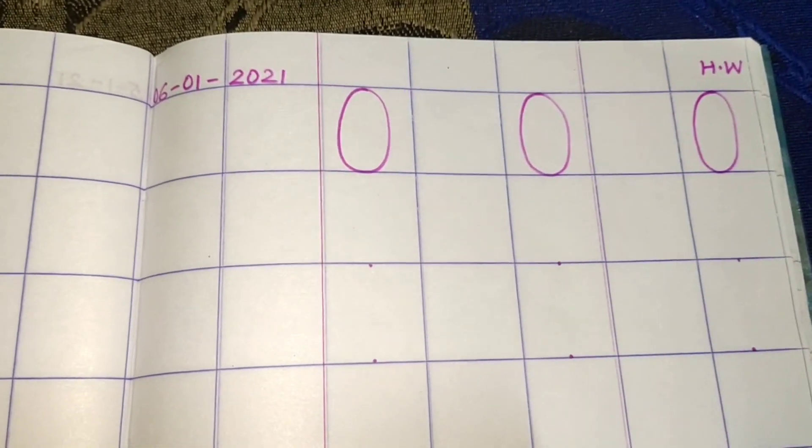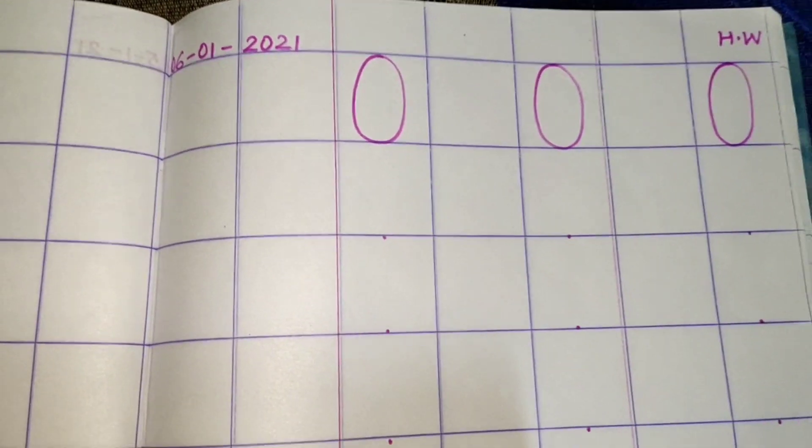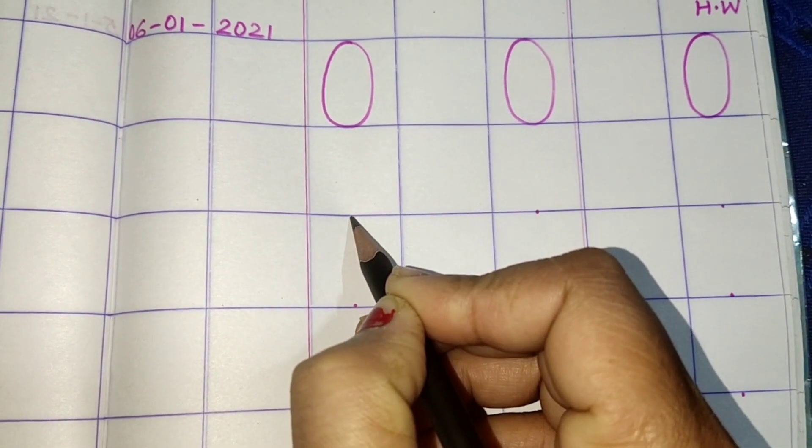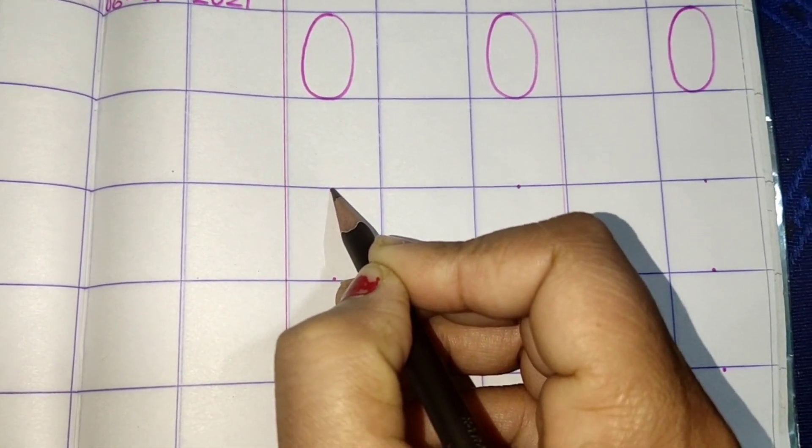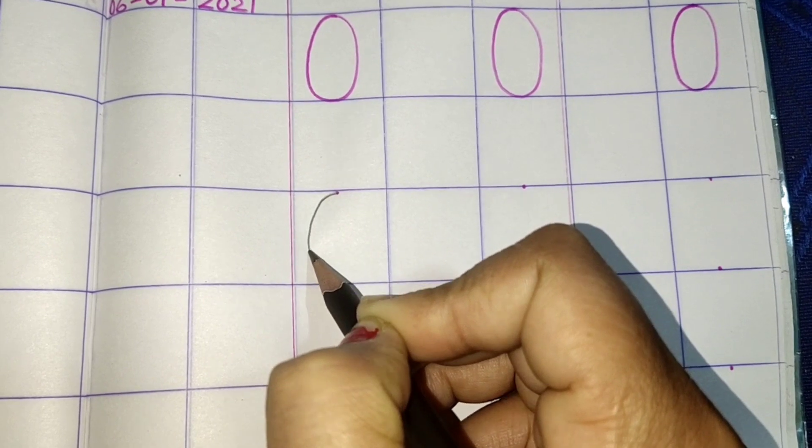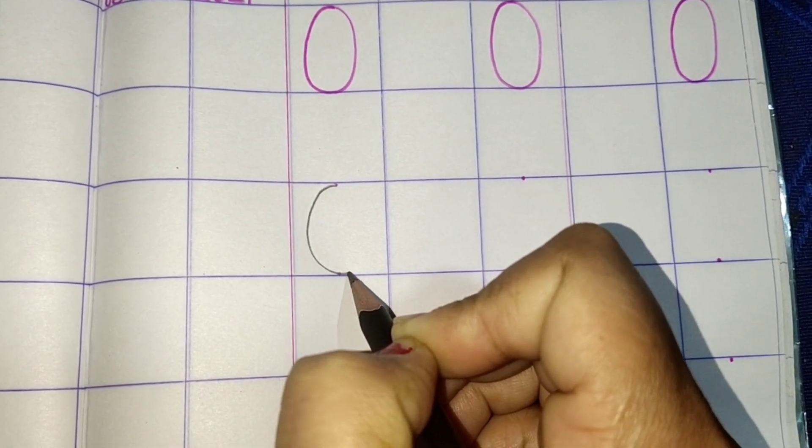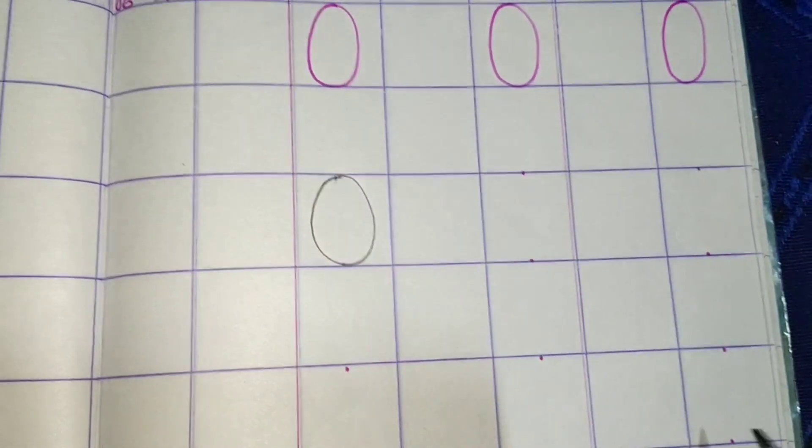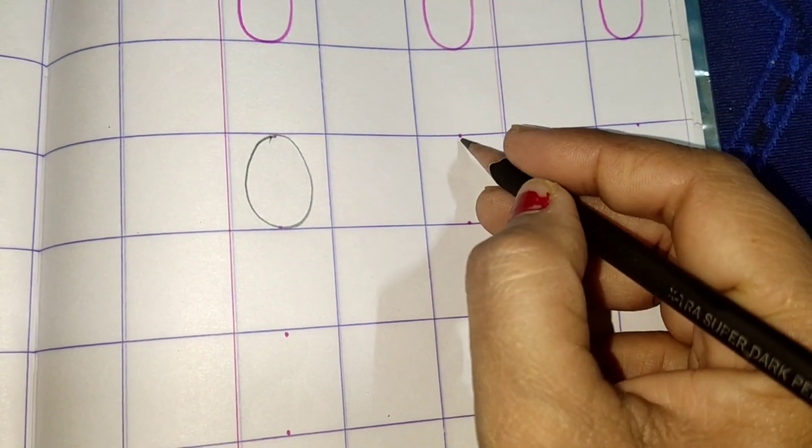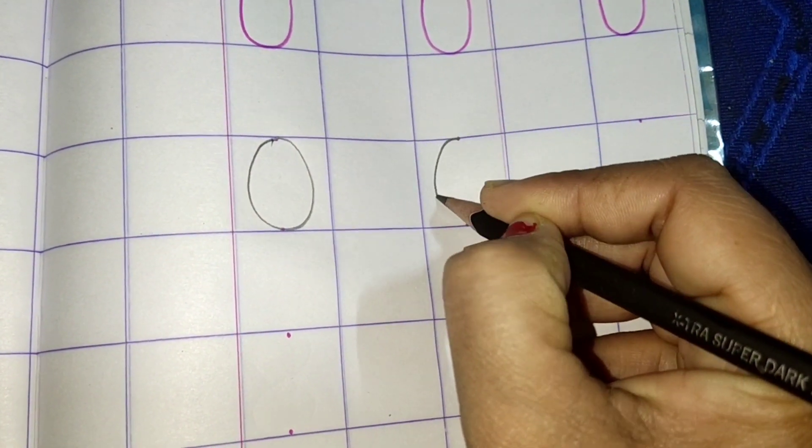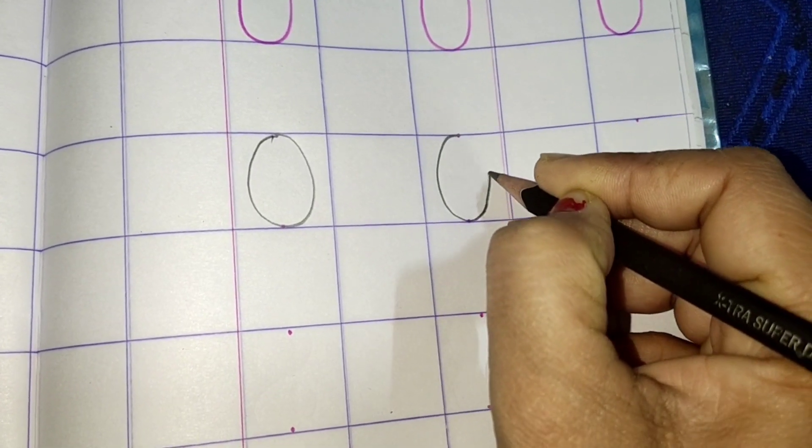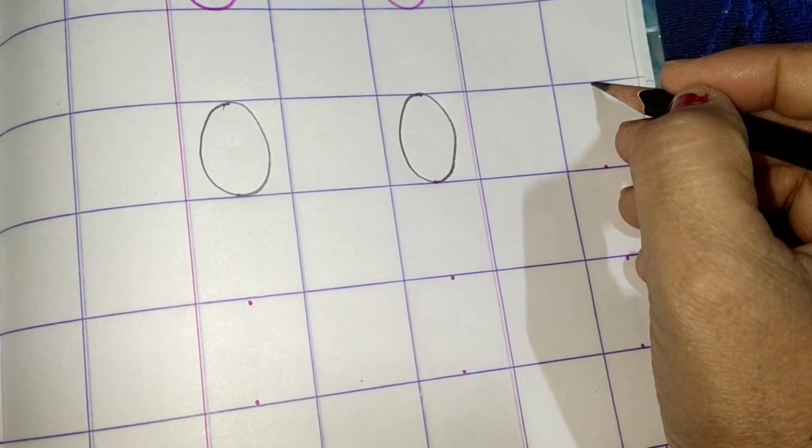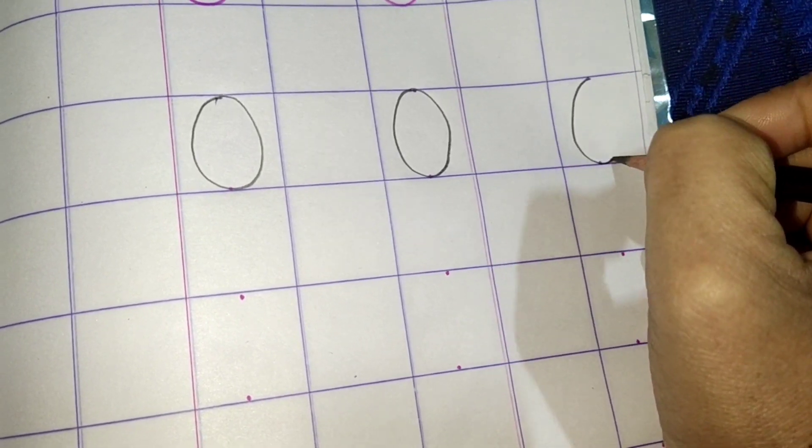Okay. Now, let's see how we write number zero. Start from the dot. Top dot. Make a curve down. Touch the down dot. Go up. Touch the top dot again. Zero. It looks like O. Just like I have taught you O, we will write number zero.